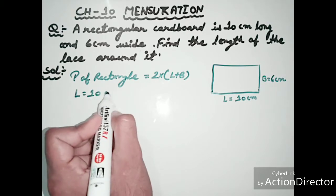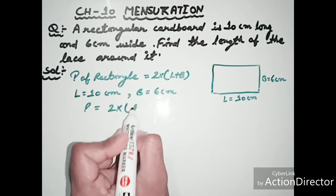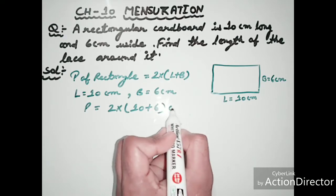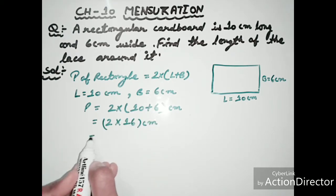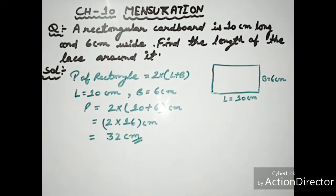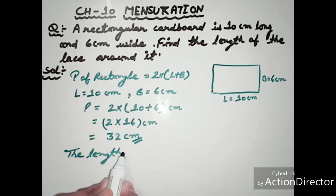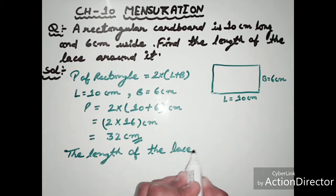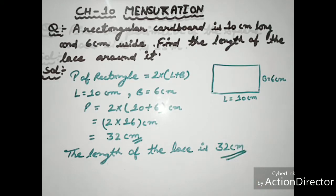So, perimeter equals 2 into (10 + 6) centimeters. 10 plus 6 is 16, and 2 into 16 is 32 centimeters. Therefore, the length of the lace around it is 32 centimeters.